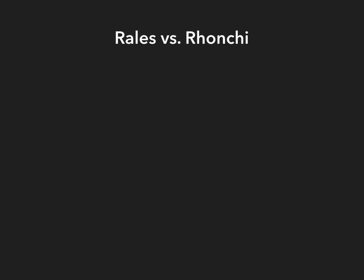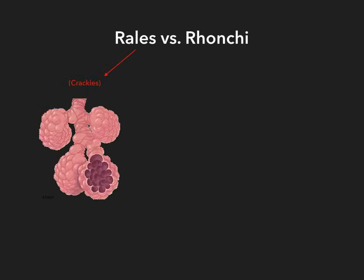We're going to talk about the main differences between Rails versus Ronchi. First I'll give you the normal, then I'll give you my mnemonic for remembering the difference, and then we'll summarize at the end. With Rails, it's often used interchangeably with the word Crackles. The Rails or Crackles occur at the level of the alveoli. Recall that the alveoli are the most distal or terminal portion of the respiratory tree. So Rails occur at the most distal portion of the respiratory system — the alveoli.